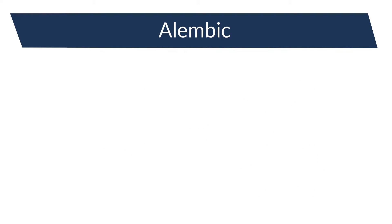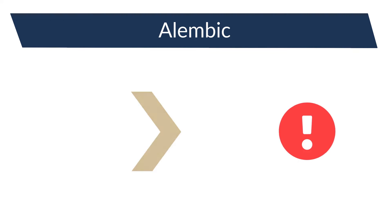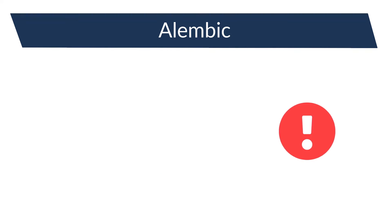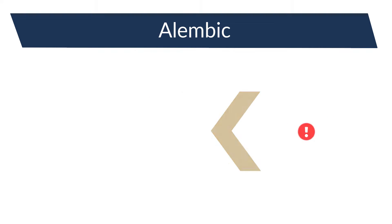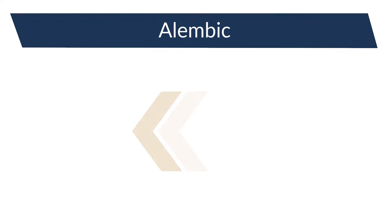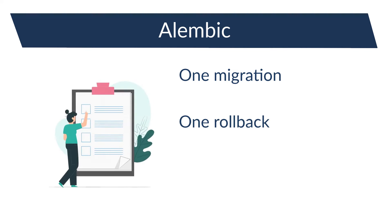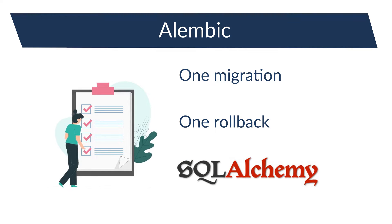Another advantage of tools like Alembic is that if there is a problem and I want to roll back one version of code, Alembic allows me to also roll back the database schema easily. With Alembic, each new modification on the database will be done in a separate file. Within this file I will also include the rollback operation. The migration will be done with the SQLAlchemy engine.